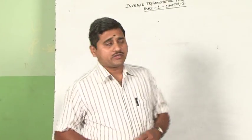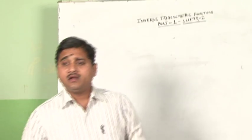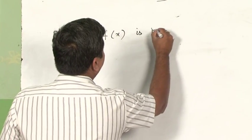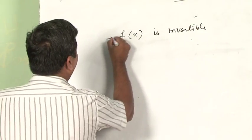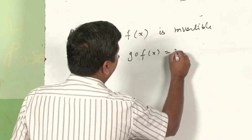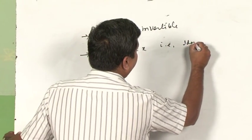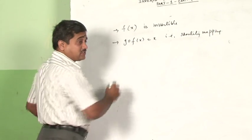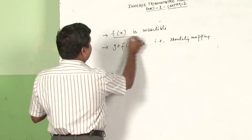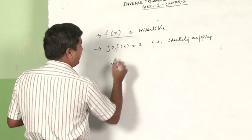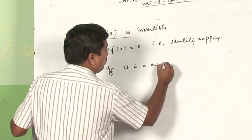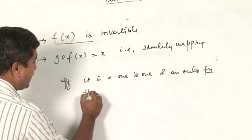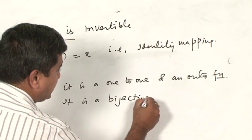Before we understand about inverse trigonometric functions of chapter 2 in part 1, let us first understand why and when a function f(x) is invertible, and what is the condition for g∘f(x) = x, that is the identity mapping. A function is invertible if and only if it is a one-to-one and onto function — that is, a bijective function.